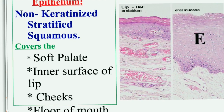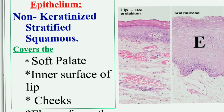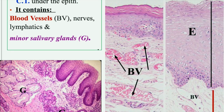The oral mucosa is formed of non-keratinized stratified squamous epithelium and covers four sites: the soft palate, the inner surface of the lip, the cheeks, and the floor of the mouth. The keratinized stratified squamous epithelium is present on the outer surface of the lip, as well as three other sites: the gums, the dorsal surface of the tongue, and the hard palate — so we have four sites each.